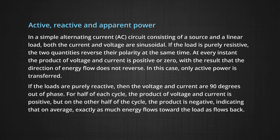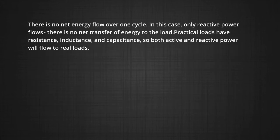If the loads are purely reactive, then the voltage and current are 90 degrees out of phase. For half of each cycle, the product of voltage and current is positive. But on the other half of the cycle, the product is negative, indicating that on the average exactly as much energy flows toward the load as flows back. That is there is no net energy flow over one cycle. In this case only reactive power flows, there is no net transfer of energy to the load.